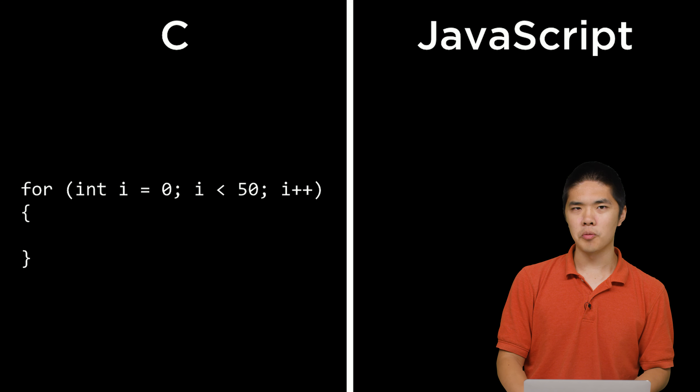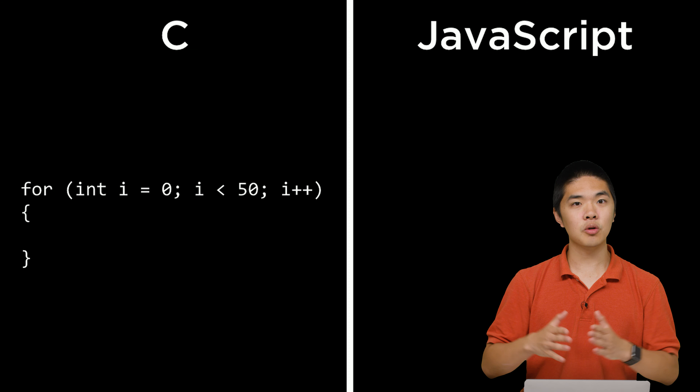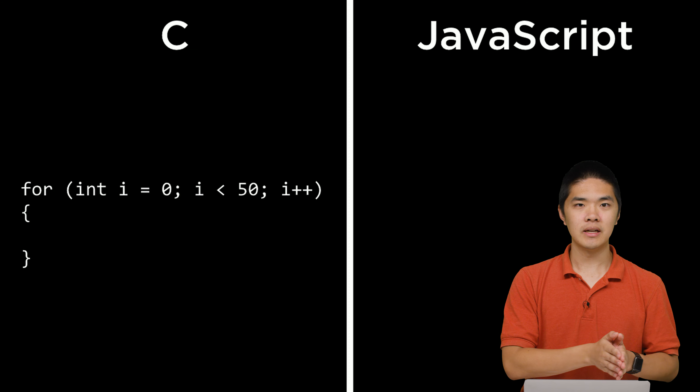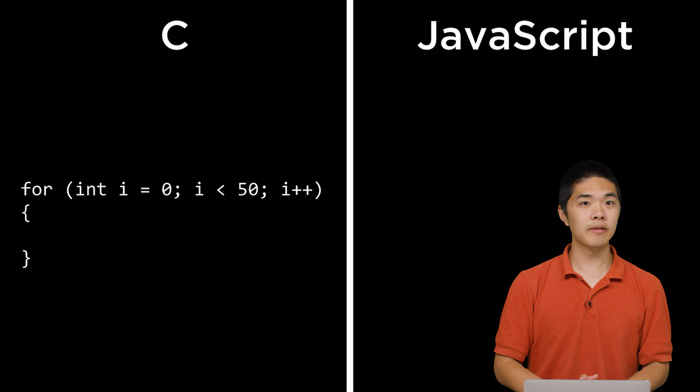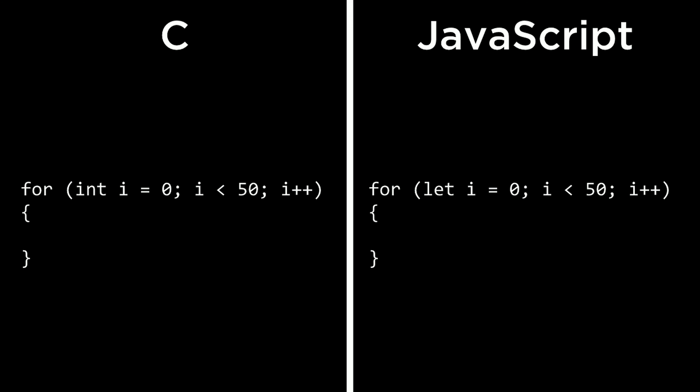In C, a for loop that ran 50 times looked like: for (int i = 0; i < 50; i++). In JavaScript it's very similar, but just as when declaring variables, we don't specify int. Instead we use let: for (let i = 0; i < 50; i++). The only change is replacing int with let.